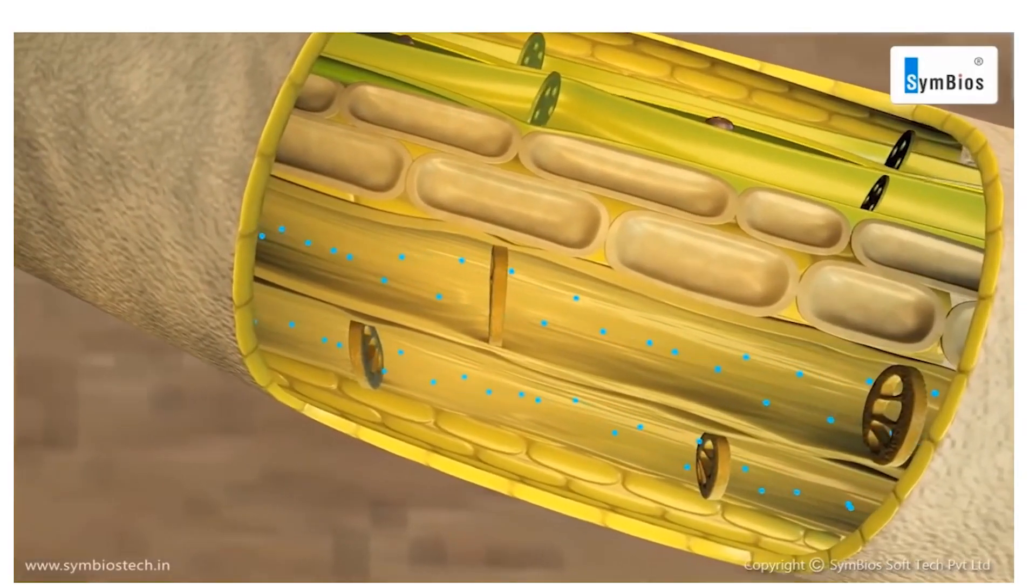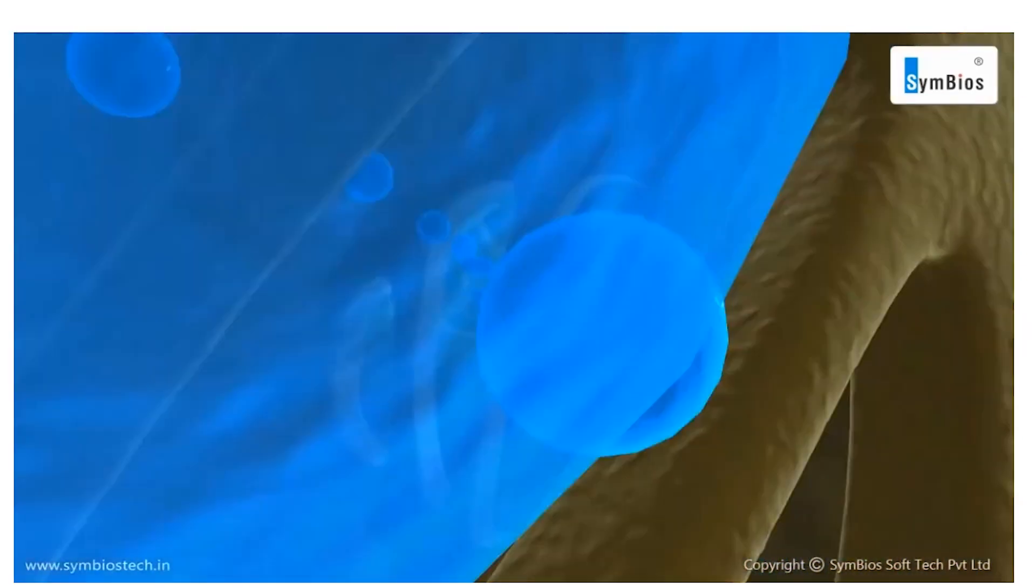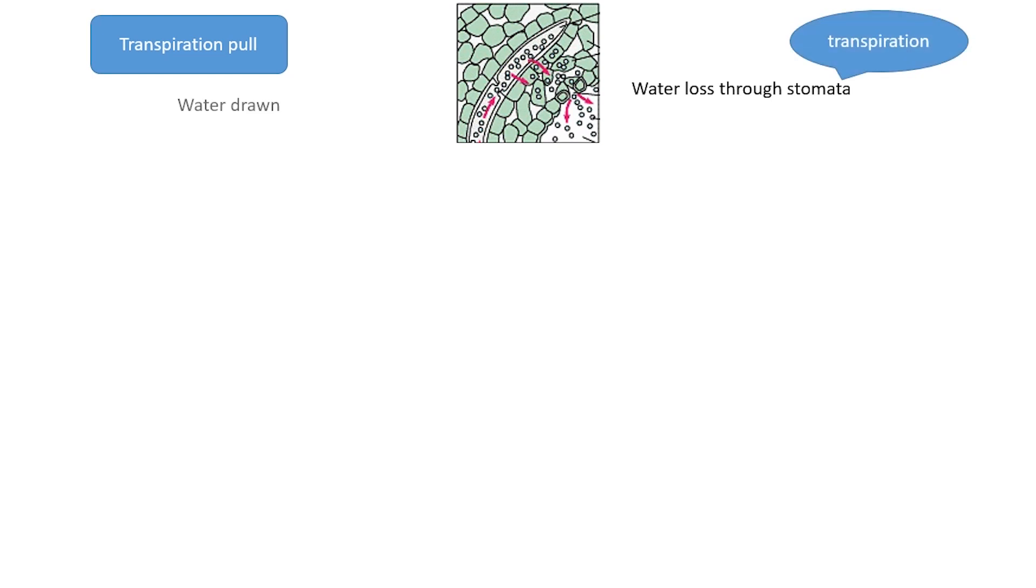Transpiration pull is a suction force which aids in pulling up water through the plant. Continuous water loss at the surface of leaves occurs by the process of transpiration. Water evaporates from intercellular spaces of the leaves to the outer atmosphere through the stomata.